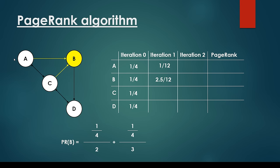What about B? We have to consider web pages pointing to website B. The page rank of A in the previous iteration is 1/4. How many outgoing links does website A have? 2 — so we divide by 2. Plus we have to consider node C: C has page rank 1/4 in the previous iteration, divided by its 3 outgoing links, giving 1/4 divided by 3. So 2.5 divided by 12 is going to be the page rank of website B in the first iteration.